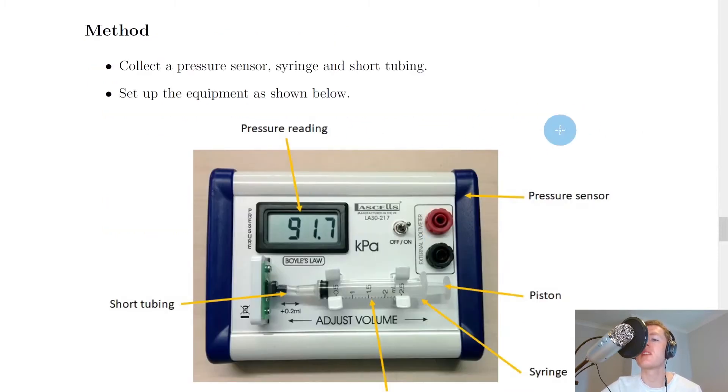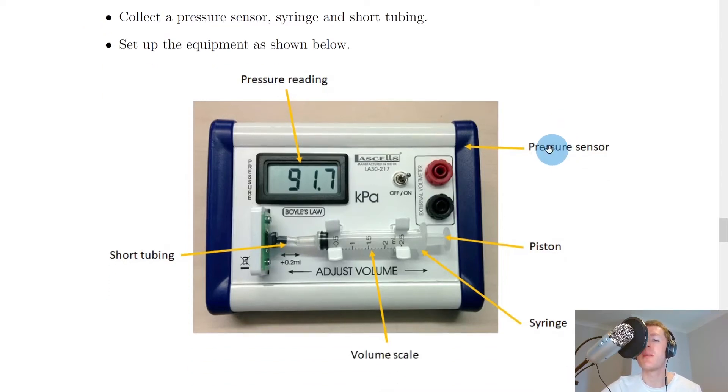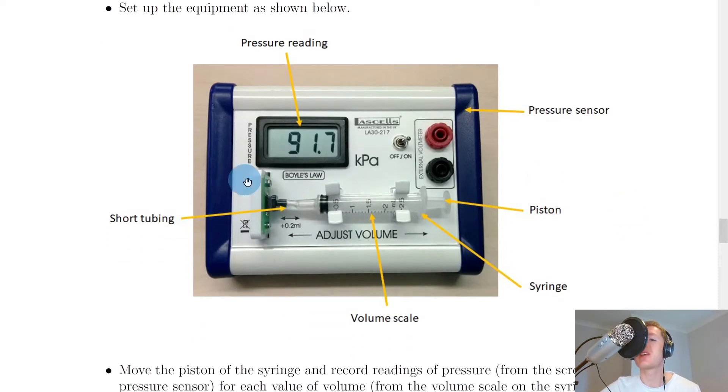Before I show you the method outlined here, it's worth pointing out you can do this experiment in different ways. Instead of using my pressure sensor with a syringe, you could use a large column of air with a volume scale and a pressure gauge, with a standard foot pump. But I'd say this method here is a bit more modern and high tech.